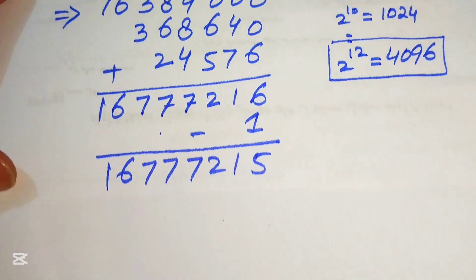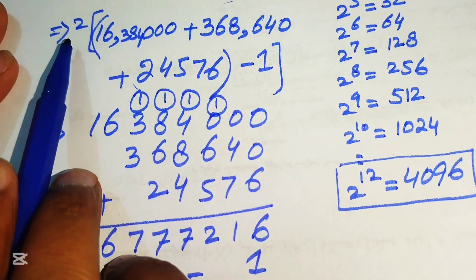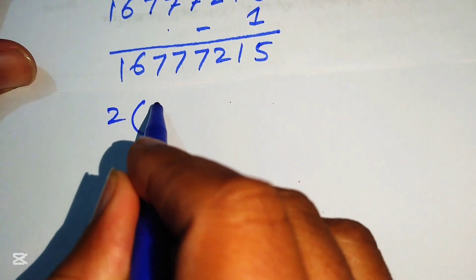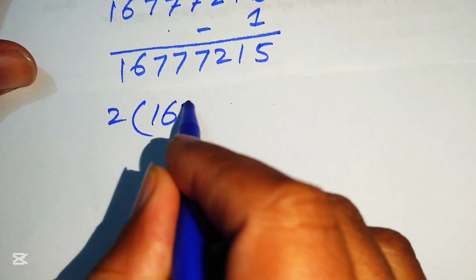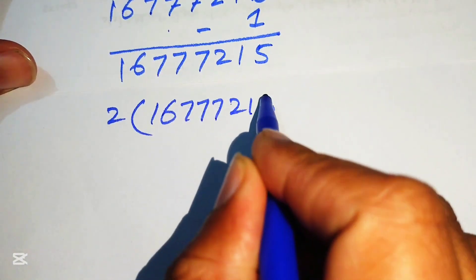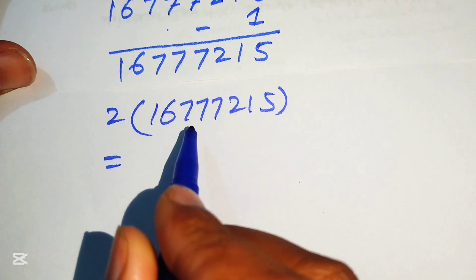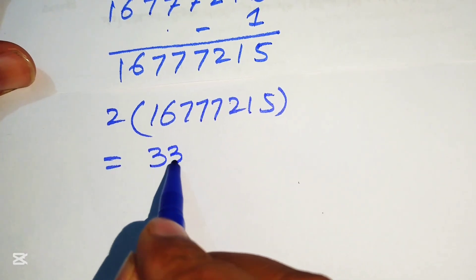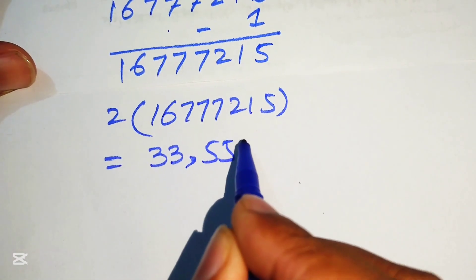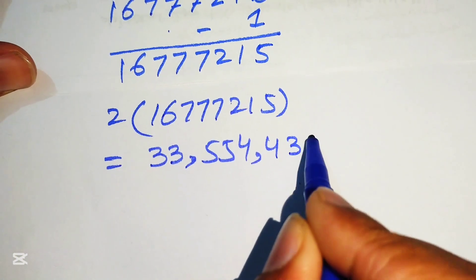In the final step we substitute this value back and multiply by 2: 2 times 16,777,215. Multiplying gives the final answer: 33,554,430.